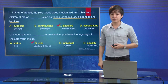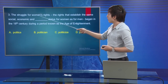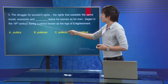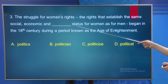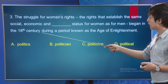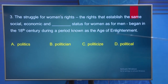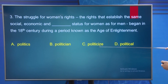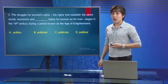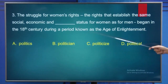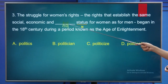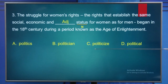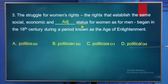Number 3: 'The struggle for women's rights, the rights that establish the same social, economic and ___ status for women as for men began in the 18th century during a period known as the age of enlightenment.' Options: A. Politics, B. Politician, C. Politicize, D. Political. Status is a noun, so we need an adjective before it. The answer is D - Political, as it is an adjective: 'political status'.